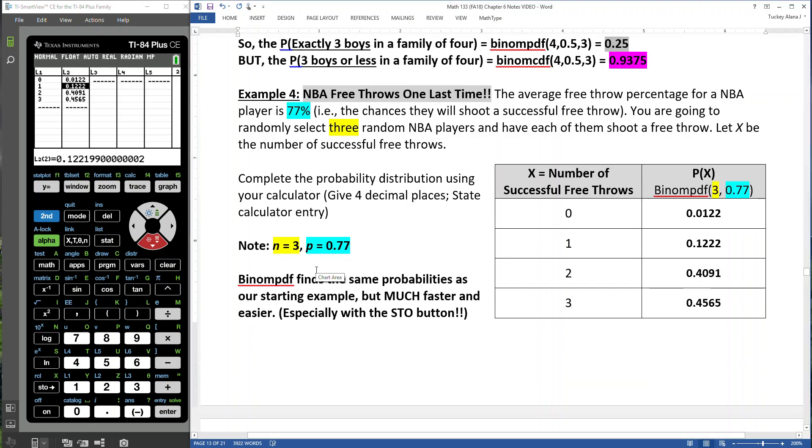So the binom PDF finds the same probabilities as our starting example, but much faster and easier, especially with that store button, S-T-O, arrow, making it easy for us to put them right in the table and be easy to read and see.